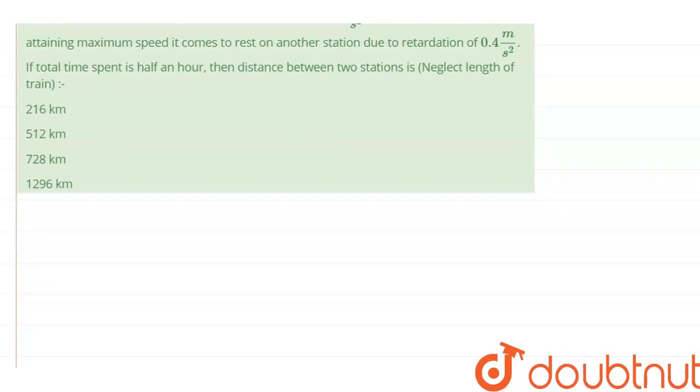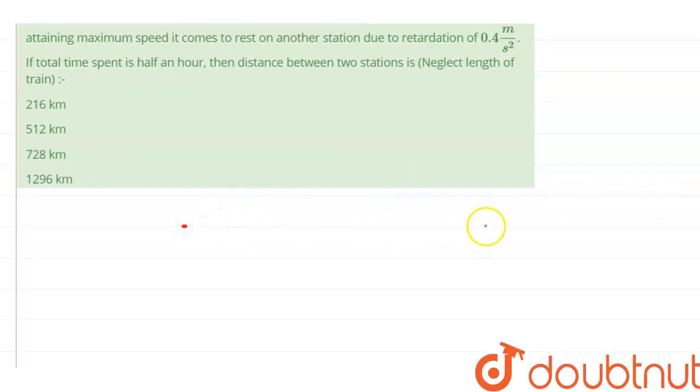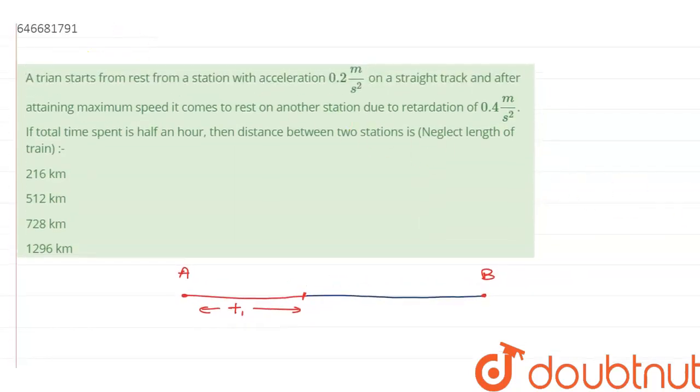So, let's say the train is moving between these two stops A and B. Now, during A and B, let's say it accelerates for the time T1. And after this time T1, it decelerates. Now, let this time be T2. And the distance for which it accelerates is D1. And the distance for which it decelerates is D2.